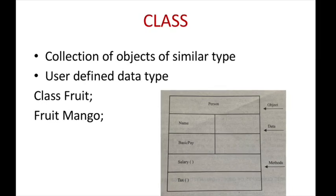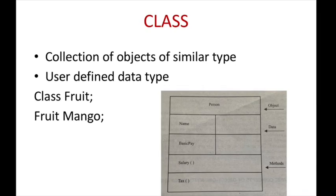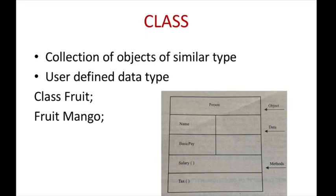A class can be thought of like a data type and object is like a variable of that data type. Once a class has been defined, we can create any number of objects belonging to that class. Consider the example of class fruit. Mango, apple, oranges are the members of class fruit.